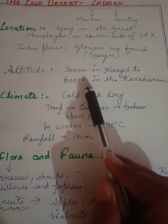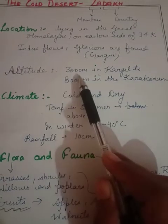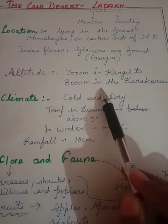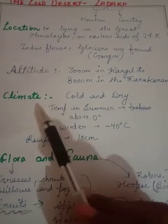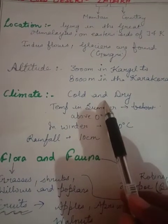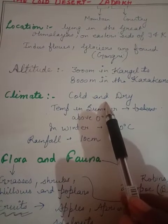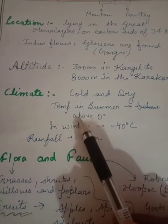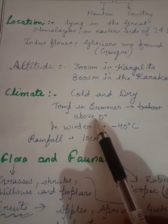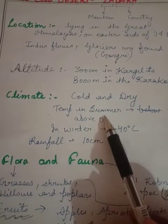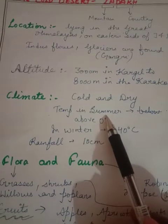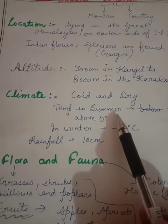Ladakh is in the eastern side of Jammu and Kashmir. Altitude increases from 3000 meters in Kargil to 8000 meters in the Karakoram Range. The climate is cold and dry. In summer, the temperature is low but just above zero degrees Celsius.